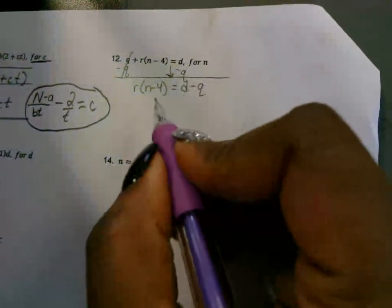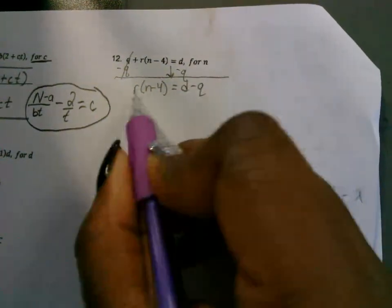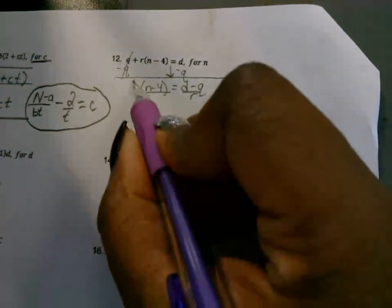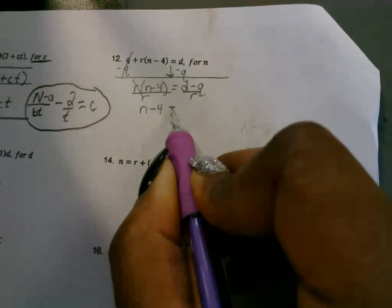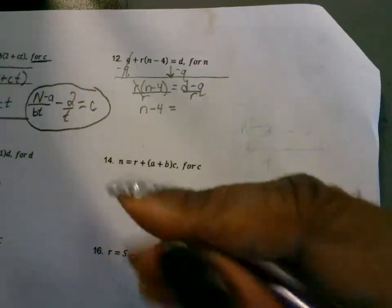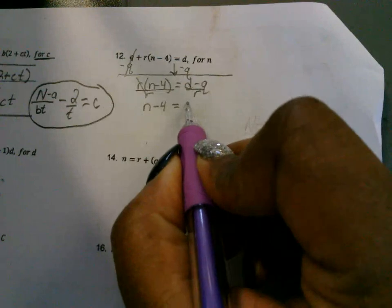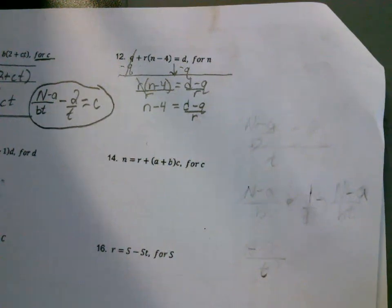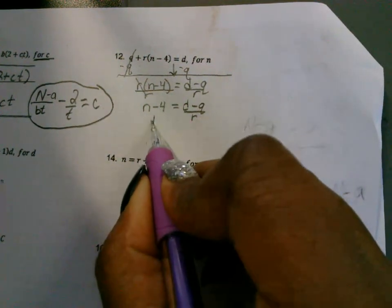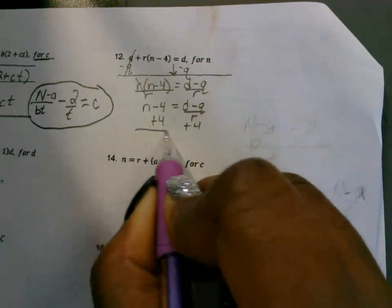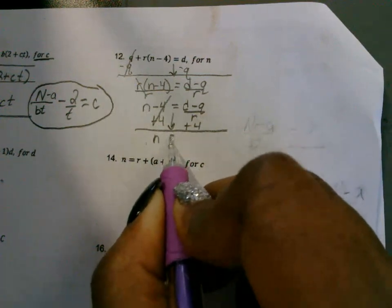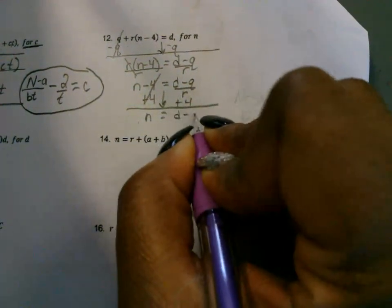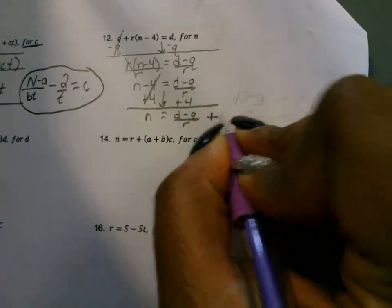Now you need to get rid of — you can't move this 4 until you get rid of this because it's being multiplied. The opposite of multiplication is division, so we're going to divide by R on both sides. That gets rid of the R and now we're left with what's in the parentheses. Don't distribute the R because that's spreading the R out when you're trying to get rid of it. Now on this side you have D minus Q divided by R. So now we can move the minus 4 by adding 4 to each side, and we're left with N is equal to D minus Q divided by R plus 4.